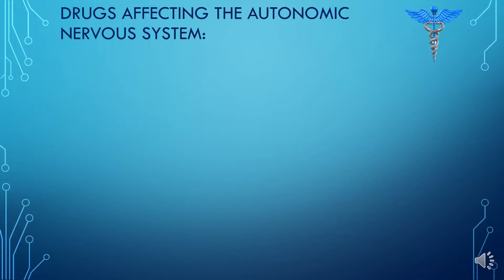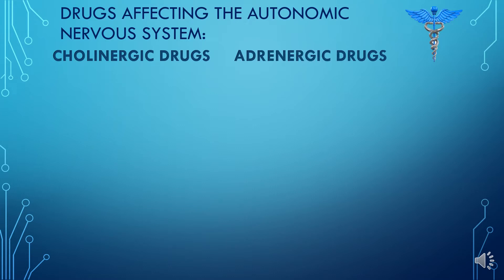The drugs that affect our autonomic nervous system are classified into cholinergic drugs and adrenergic drugs. The cholinergic drugs mimic the action of acetylcholine, while adrenergic drugs mimic the action of epinephrine and norepinephrine.